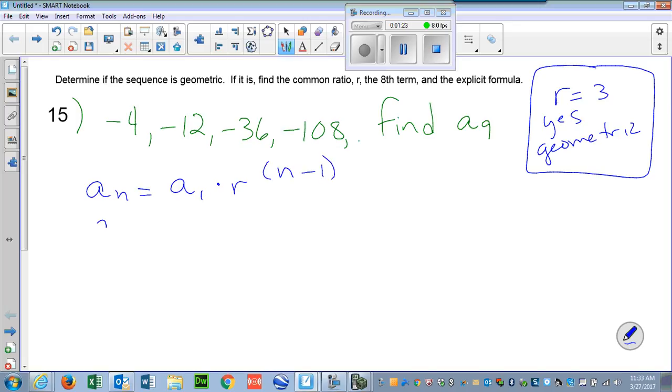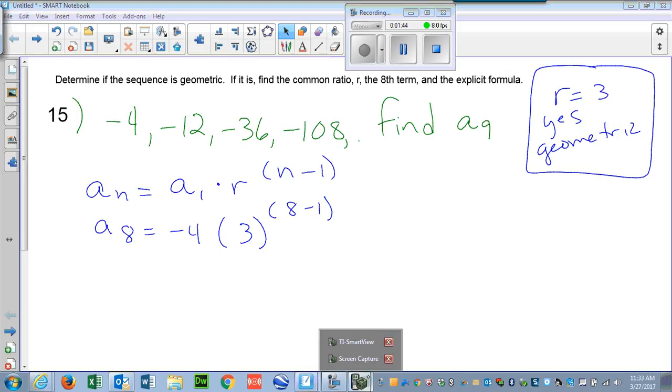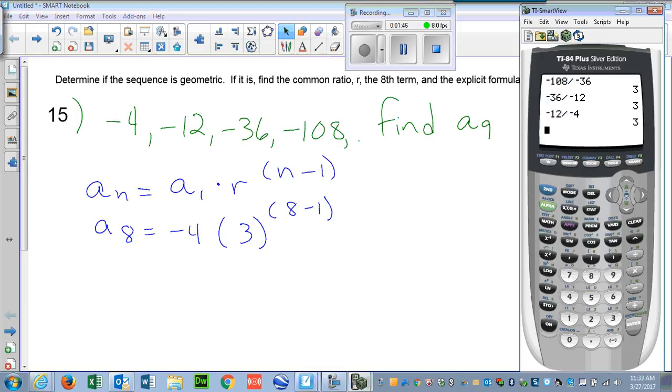Okay, so if I want to find my eighth term, I'm looking for a sub 8. That means the eighth term. My first term is negative 4. My common ratio, remember, we found is 3. And if I'm looking for my eighth term, n is 8. Okay, so let's try and do this one a little bit more quickly. Let's type this one in exactly as I've written it on my calculator. Okay, so once you have it set up, you can actually do it like this.